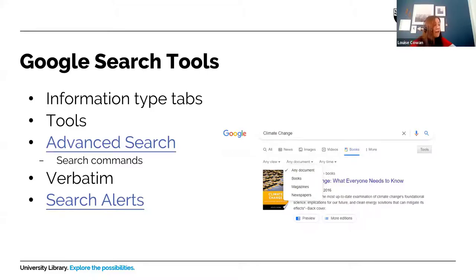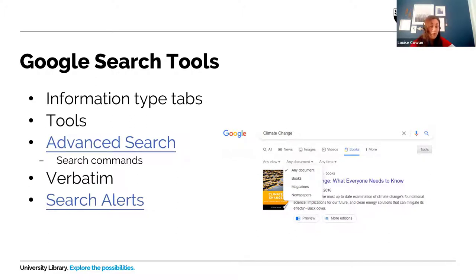Just to quickly show you some of the tools available on Google — not Google Scholar, because there are slightly different tools for both. A couple of search tools available on Google: you've got the information type tabs along the top when you do a search. There's also a selection of tools which change depending on which tab you're on, that you can use to refine your results. There are lots of advanced search commands and functions you can use to make your results more relevant, something called verbatim, and you can also set up search alerts.